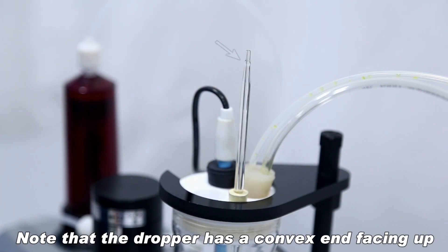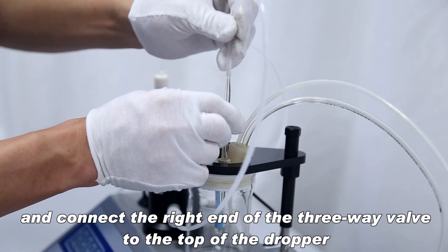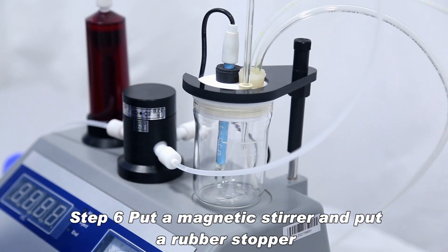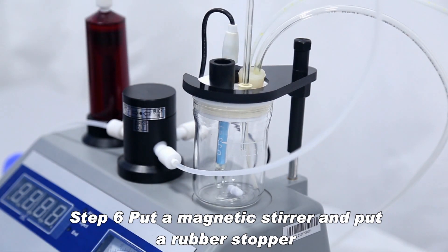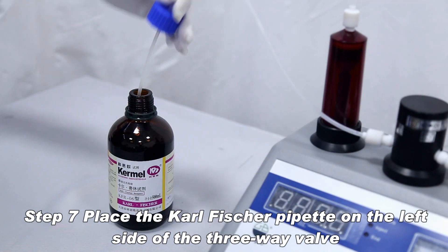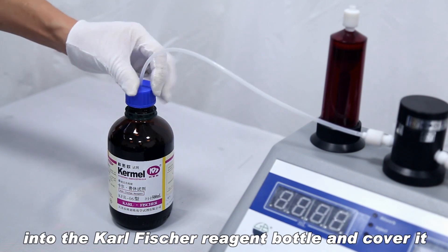Note that the dropper has a convex end facing up and connect the right end of the 3-way valve to the top of the dropper. Put a magnetic stirrer and put a rubber stopper. Place the Karl Fischer pipette on the left side of the 3-way valve into the Karl Fischer reagent bottle and cover it.